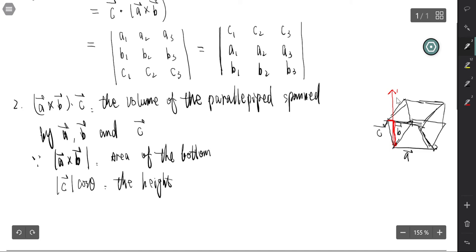So the bottom, the area of the bottom times the height, that is the volume. So we got the result as A cross B dot C, that is the volume.